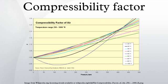The compressibility factor, also known as the compression factor, is the ratio of the molar volume of a gas to the molar volume of an ideal gas at the same temperature and pressure. It is a useful thermodynamic property for modifying the ideal gas law to account for real gas behavior.